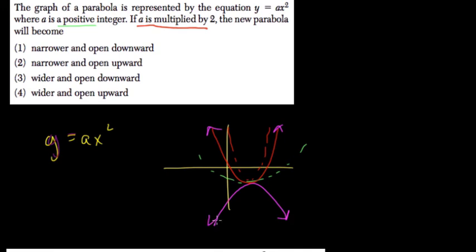So when you multiply a positive by another positive, like 2, it still opens upward, but steeper. So it's opening upward and steeper.